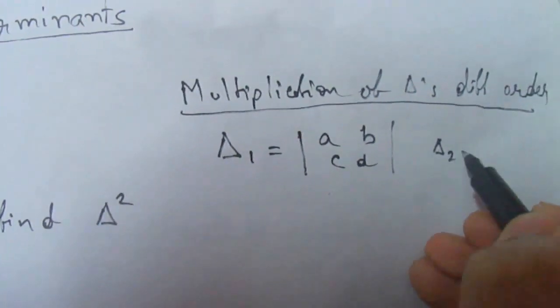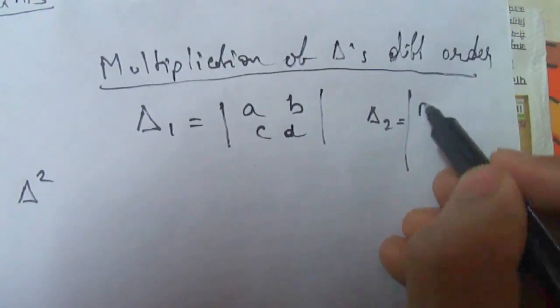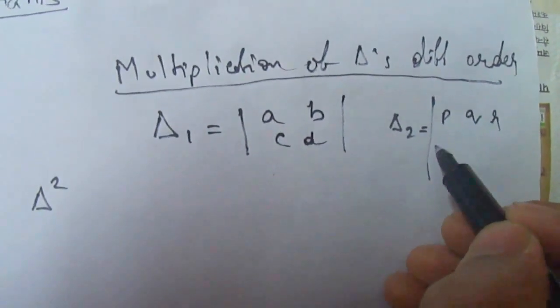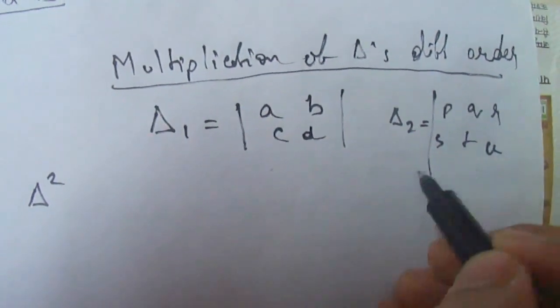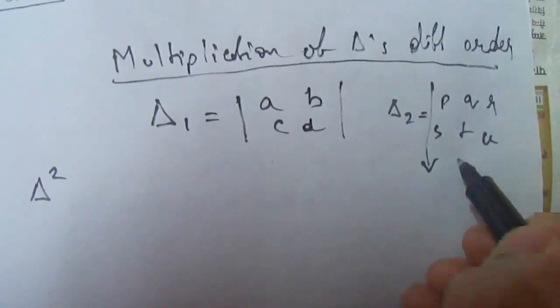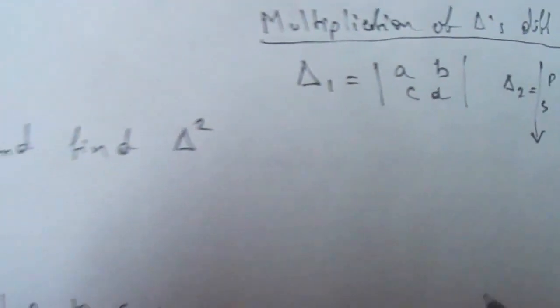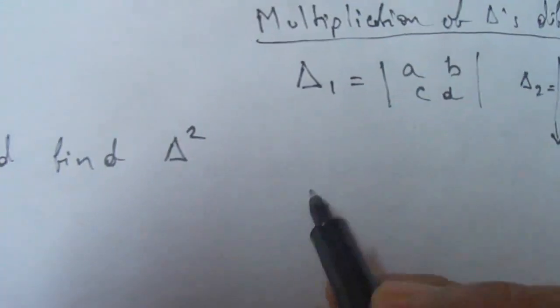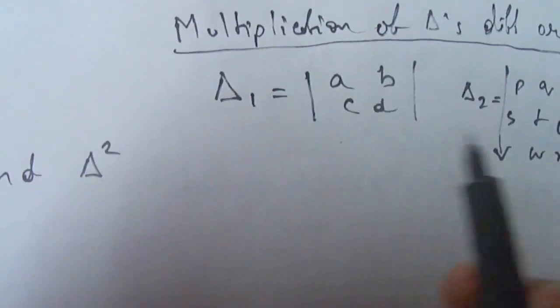And del 2 will be given like this: p, q, r, s, t, u, v, w, x. We can see that both the determinants are of different order.